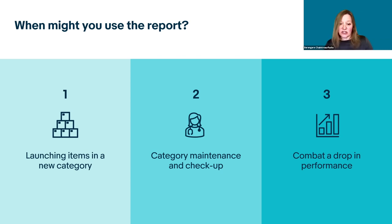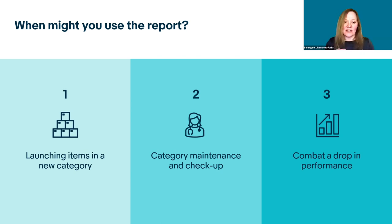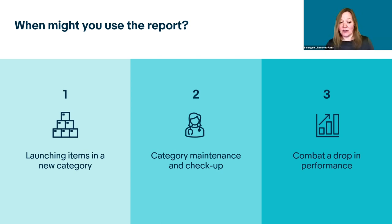Secondly, we mentioned the concept of a health check at the start of this workshop. This report is a bit like giving your inventory a checkup, because it is not just about what can be improved — it's also about looking at what is working well, by seeing where your listings meet or exceed the top 10% benchmark figure. Perhaps the strong areas can be replicated elsewhere in your inventory. And finally, you could use the report to help combat a drop in performance if you are seeing this in a particular category.